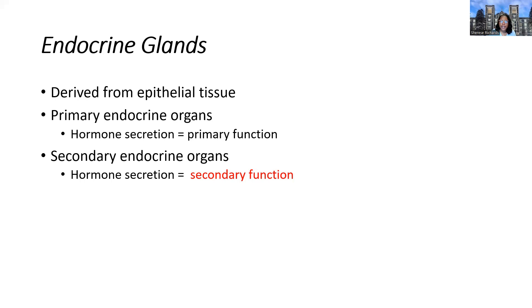Another important aspect of the endocrine system is that the glands are derived from epithelial tissue. Epithelial cells form all of our body cavities — the skin, the internal lumen of the GI tract, the respiratory tract — and those same epithelial cells also form glandular tissue, giving them the ability to secrete and produce many of the hormones that need to be released.